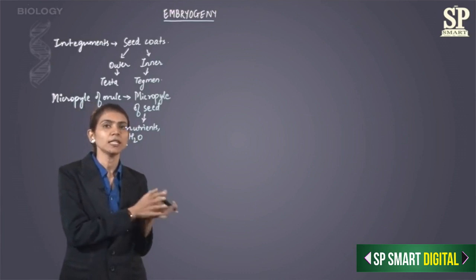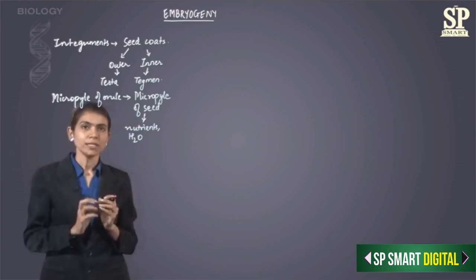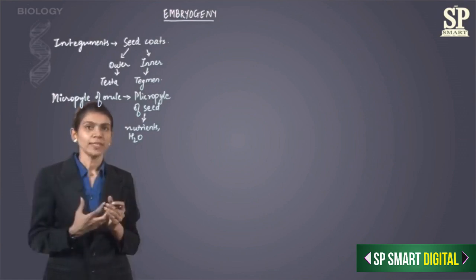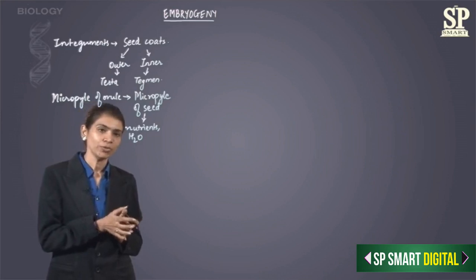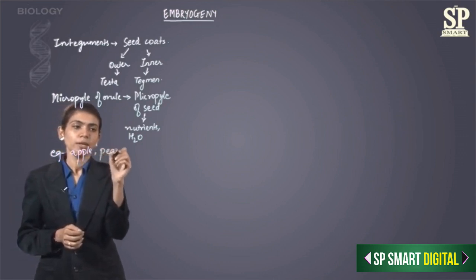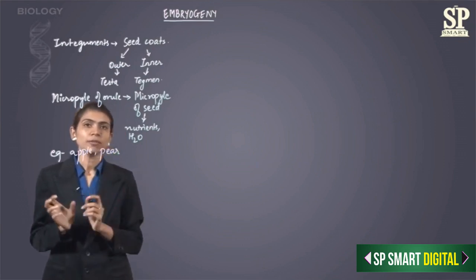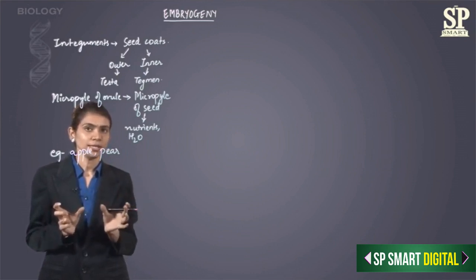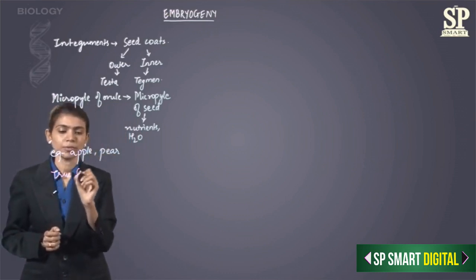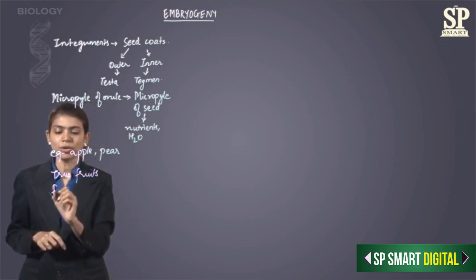So those were the changes taking place in the formation of the embryo, the seed, and the fruit. In certain fruits, floral parts also take part in formation of the fruit. For example, the thalamus of the flower gets converted into the fruit, like we see in fruits like apple and pear. Those are called false fruits.